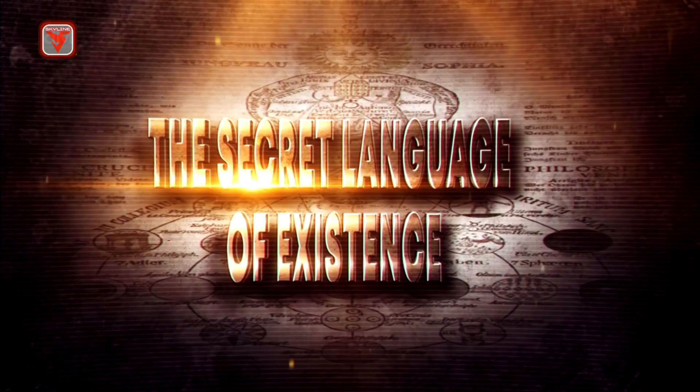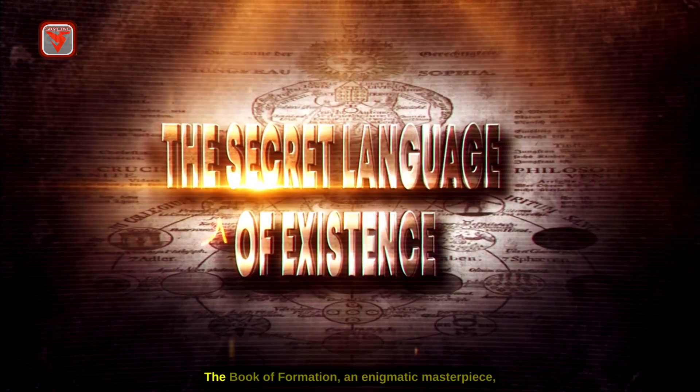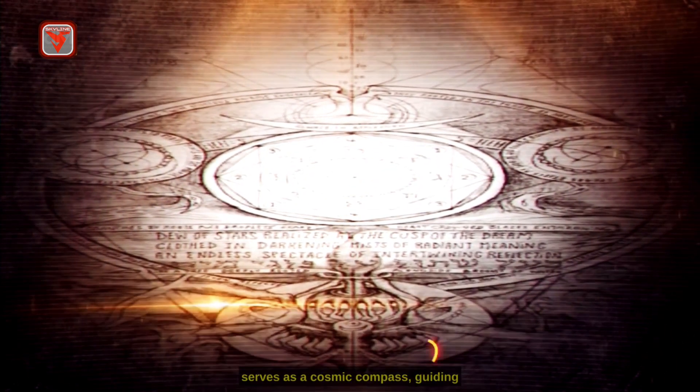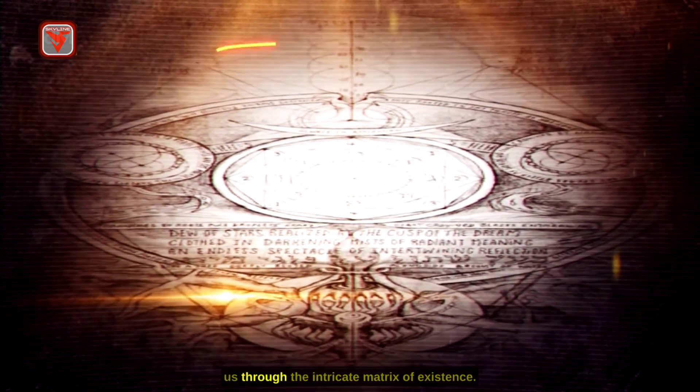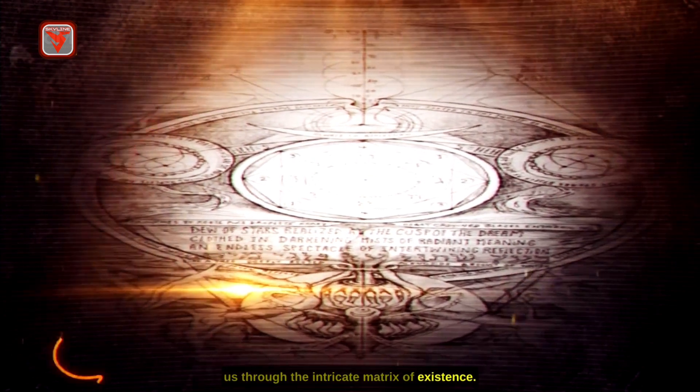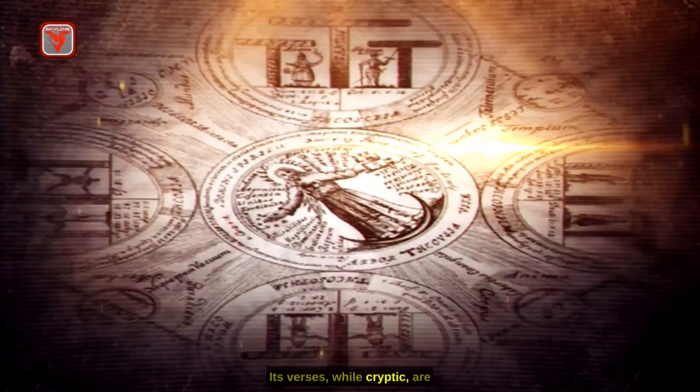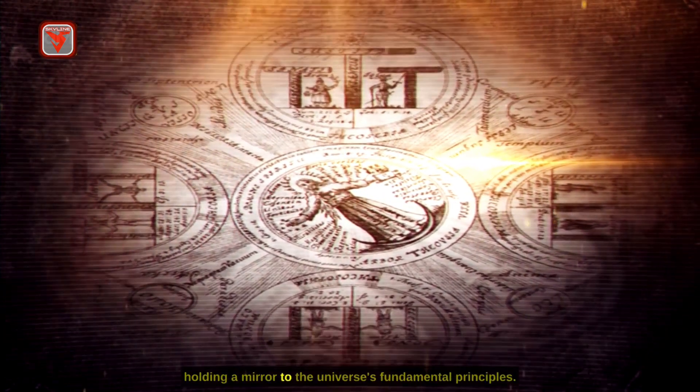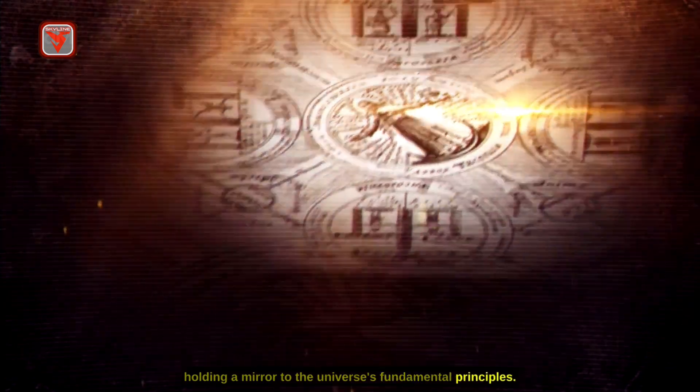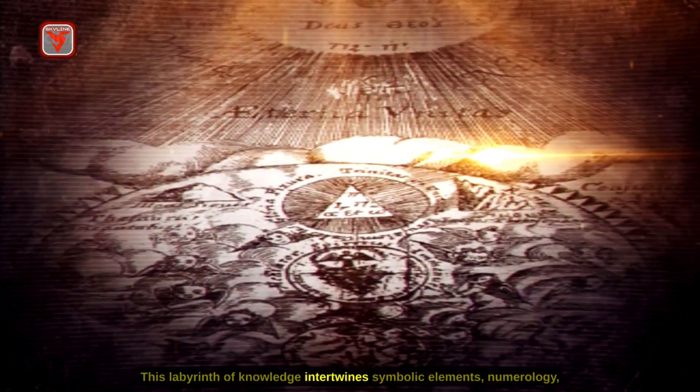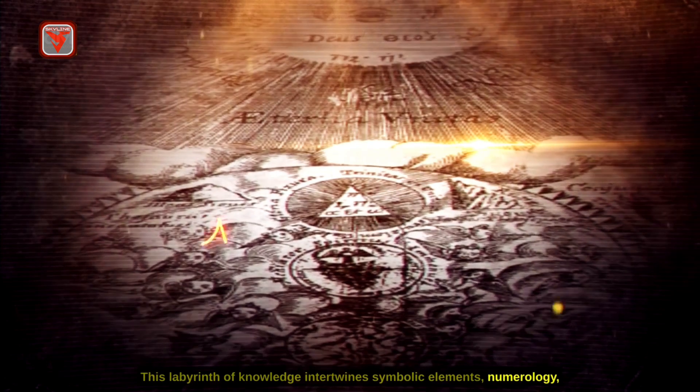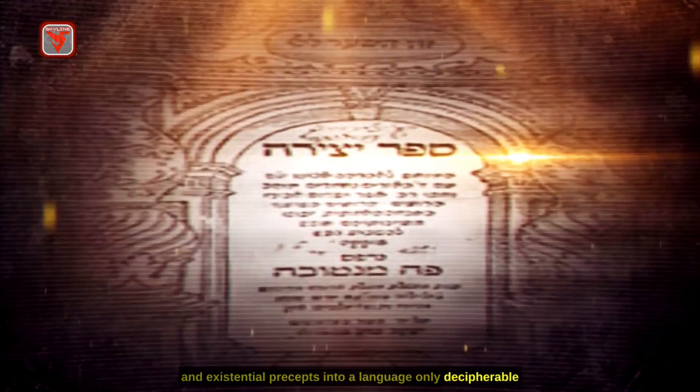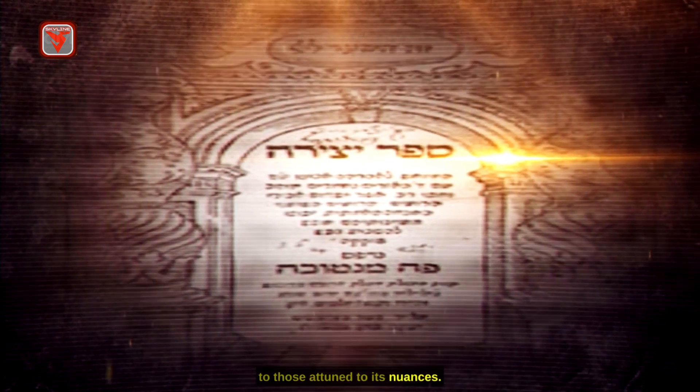The Secret Language of Existence. The Book of Formation, an enigmatic masterpiece, serves as a cosmic compass guiding us through the intricate matrix of existence. Its verses, while cryptic, are encoded with profound wisdom holding a mirror to the universe's fundamental principles. This labyrinth of knowledge intertwines symbolic elements, numerology, and existential precepts into a language only decipherable to those attuned to its nuances.